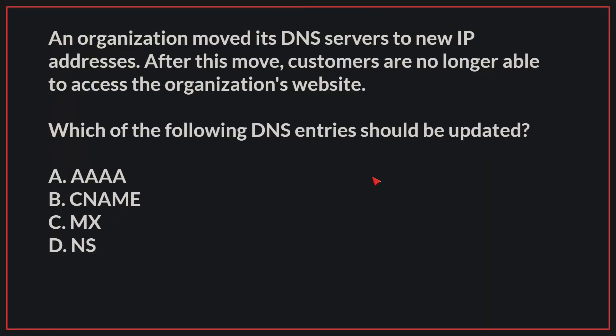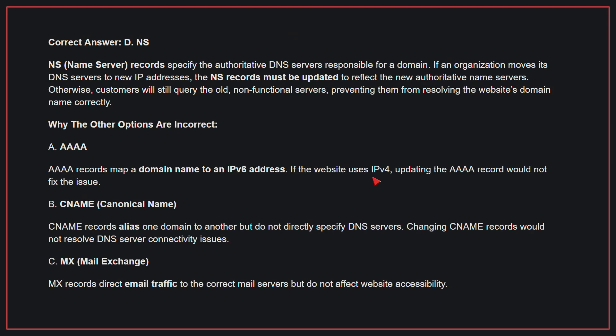An organization moved its DNS servers to new IP addresses. After this move, customers are no longer able to access the organization's website. Which of the following DNS entries should be updated? The correct answer is D, NS. Nameserver records specify the authoritative DNS servers responsible for a domain. If an organization moves its DNS servers to new IP addresses, the NS records must be updated to reflect the new authoritative nameservers.